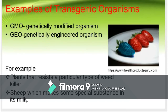Other examples of transgenic organisms include glow-in-the-dark tobacco, which has a firefly gene; fluorescent pigs and mice, which have a jellyfish gene; and BT corn, which has an insect-resistant gene from the soil bacterium Bacillus thuringiensis.